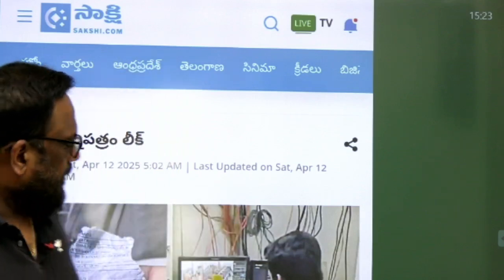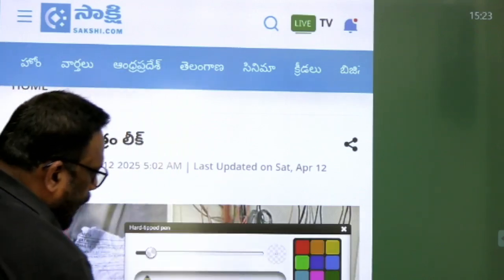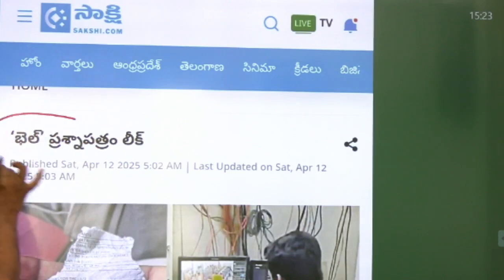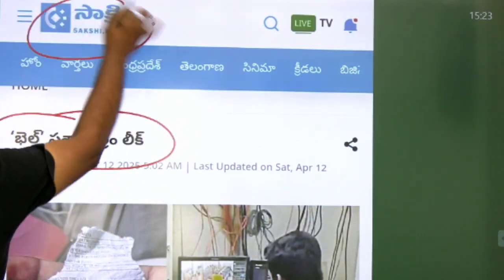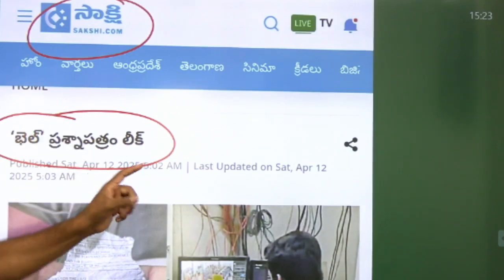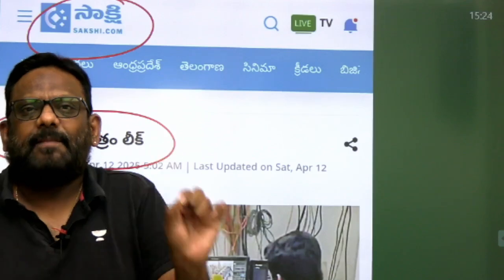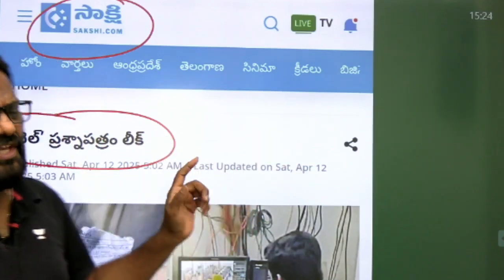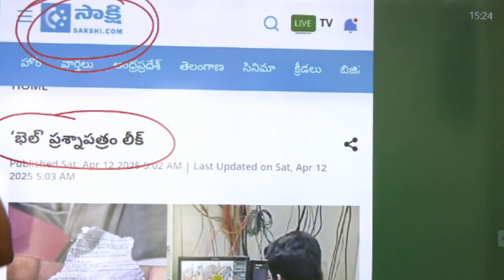So today this I found in one of the top newspapers of Andhra Pradesh. The paper name is Sakshi and the heading is BHEL Prashna Patram Leak, BHEL paper leak. This is found in today's paper of Andhra Pradesh, one of the famous papers that BHEL paper leaked and this is the image of answers behind the admit card.